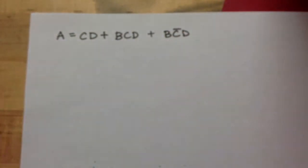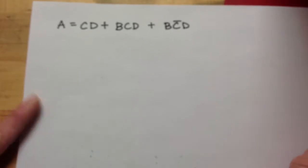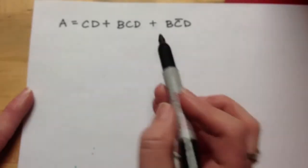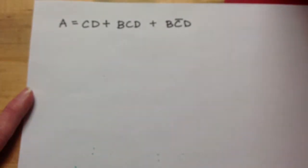Stop the video here and first make yourself a little truth table, inputs and outputs. It's a three input. We have B, C, and D. And then go ahead and try to fill in the truth table for yourself.